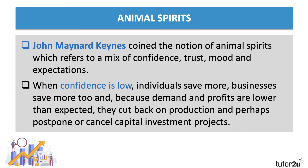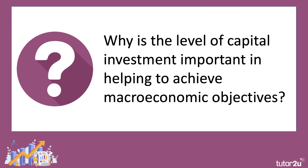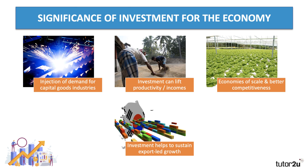However, in a downturn or recession, when confidence is fragile, individuals save more and businesses save more because expected demand and profits aren't there. They typically cut back on production, may lay off workers, and may even postpone capital investment projects.